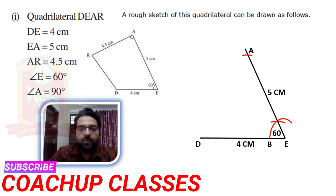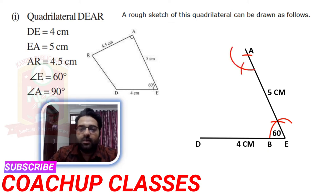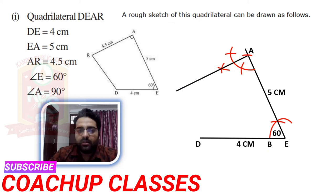Now at A, we need to draw a perpendicular, meaning we need to draw a 90-degree angle at A. So again, we will draw a 60-degree angle, and then a 120-degree angle. The midpoint between 60 and 120 will be our 90-degree angle. So we can see that the 60-degree angle is constructed, and then the 120-degree angle is constructed, and from those we construct the 90-degree angle at A.